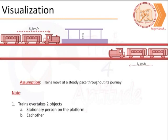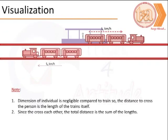The trains essentially overtake two things: one is a person standing on the platform and second is each other. This visualization shows what happens after train A has crossed the individual and also the other train.